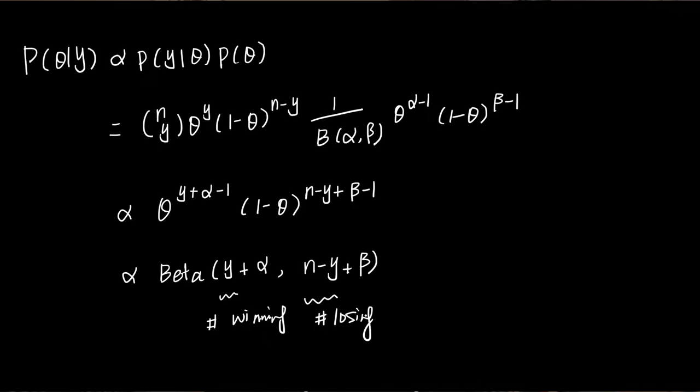In the end, the first parameter should be the number of successes plus alpha, and the second parameter should be the number of failures plus beta. I will show you a concrete example next.